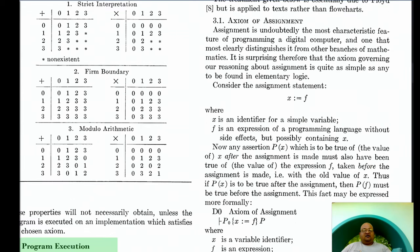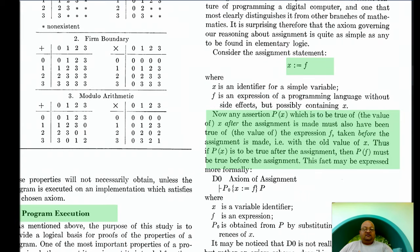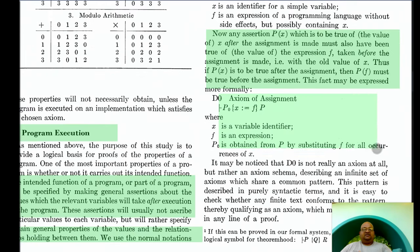Now, given this notation, we can start building out some axioms. Let's start with the most fundamental one, how to model assignment. If we have an assignment statement, x colon equals f, where f is some expression which might use x itself, note that if we make some assertion about the value of x after the assignment, x will be equal to f after the assignment. So, that very same assertion must also be true of the expression f when it is evaluated with the old value of x, the value of x before the assignment. And from this, we get our first axiom, which is the axiom of assignment, which says that if we have a precondition P0 and a post-condition P.